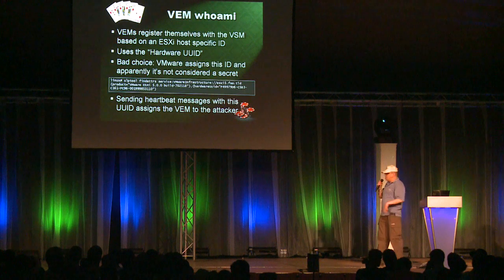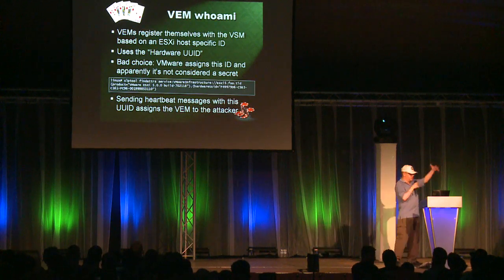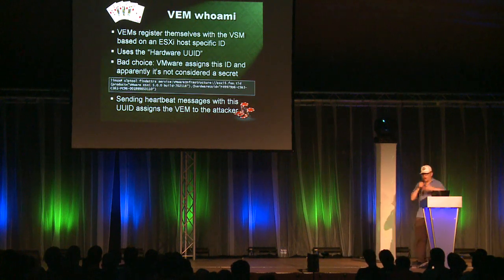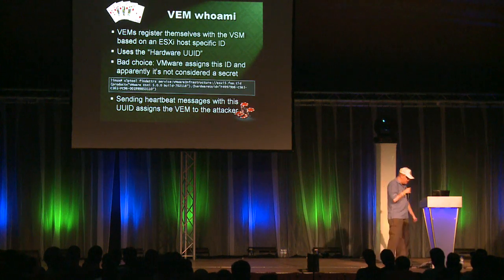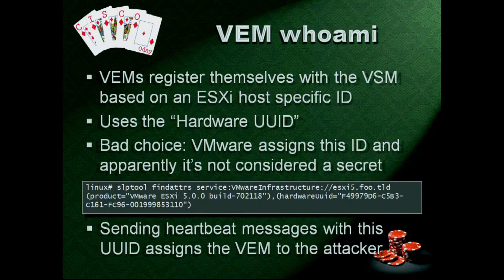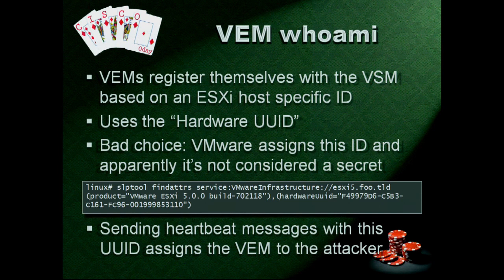There are also logic bugs. How does a VM — this virtual Ethernet module — identify itself to the virtual supervisor module? It takes something that identifies the host: the hardware UUID, a big scary number, very unique. Cisco opted to take the only ID on an ESXi host that you can query by multicast SLP from anywhere on the network — who has ESXi installed? The answer is the hardware UUID. Very bad choice for a secret. You take that UUID, put it in a packet, send it to the VSM, and you become the VEM. You just became an Ethernet module.